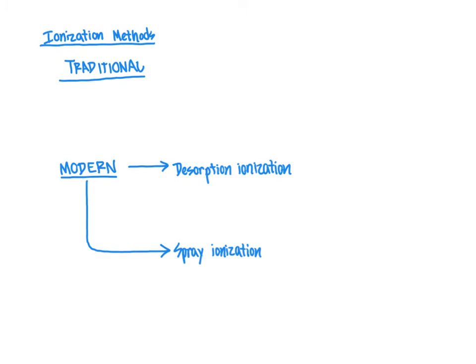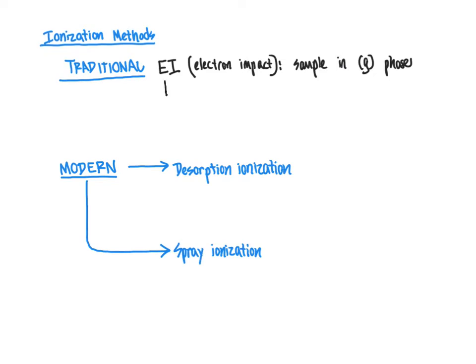The traditional method is typically electron impact, also known as electron ionization — EI for short. What happens during this technique, the old school method of ionization, is that the sample is in the gaseous phase. It is bombarded directly with a stream of electrons. It's a rather harsh ionization technique because the sample itself, the compound of interest, is being literally bombarded directly with a stream of electrons.